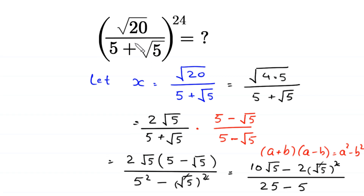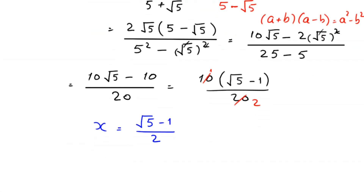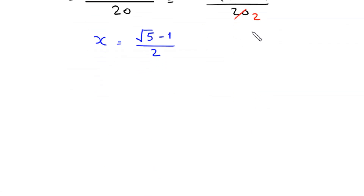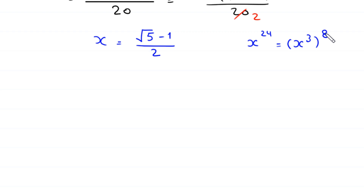Now, finding the value of root 20 over 5 plus root 5, whole to the power 24, is the same as finding the value of x to the power 24. This x to the power 24 can be written as x cubed, whole to the power 8. So, first we find the value of x cubed.